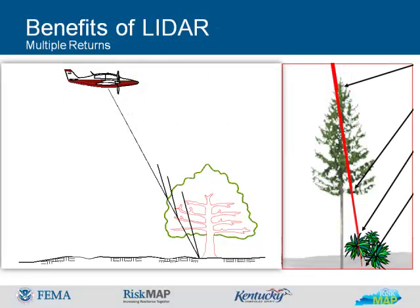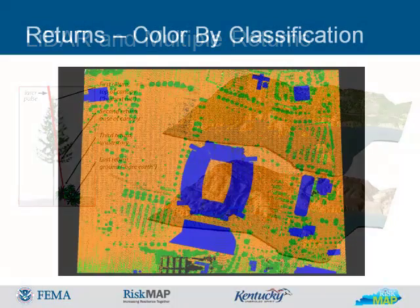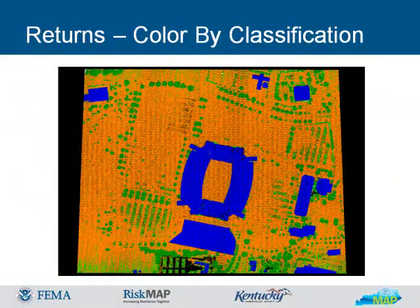Each laser pulse can hit objects at multiple levels, allowing several sets of valuable data to be captured. The pulse can capture a first return from the leaves of the tree canopy, a second return of branches, and a last bare earth return. The upper image is derived from the first return hits of the tree canopy that provide forestry and vegetation information, while the lower image is derived from bare earth last returns for ground surface information.